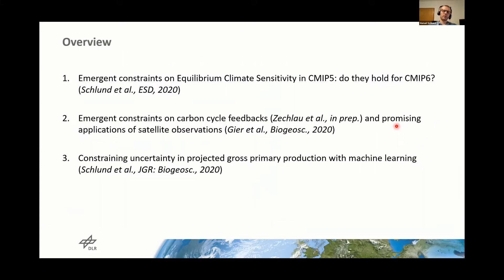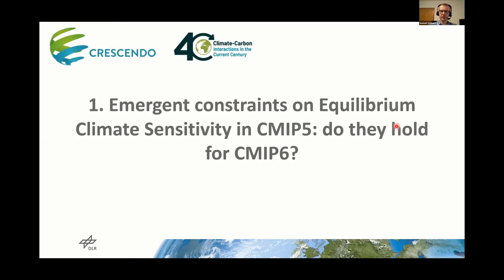The question is, how can we reduce these uncertainties? I want to present four different studies here, which will be presented in three parts. The first will be about emergent constraints on ECS, then emergent constraints on carbon cycle feedbacks and applications of satellite observations, and the third part will be a possible alternative method to emergent constraints which can also reduce uncertainties in projections.